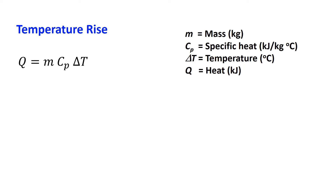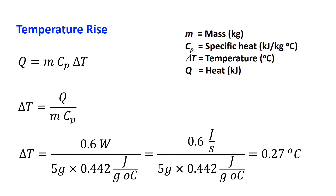For the temperature rise, we use Q equal to m·Cp·ΔT, so ΔT equals Q divided by m·Cp. If the resistor mass is 5 grams and the specific heat is 0.442 joules per gram per degree C, then ΔT equals 0.6 watts divided by 5 grams times 0.442 joules per gram per degree C — which equals 0.6 joules per second divided by 5 grams times 0.442 joules per gram per degree C — giving a temperature rise of 0.27 degree C per the applied 30 volts.